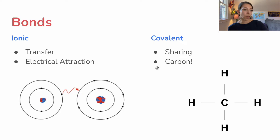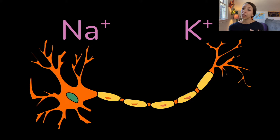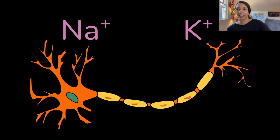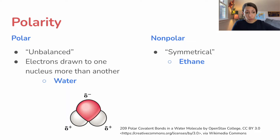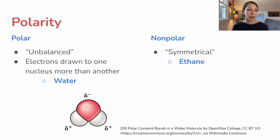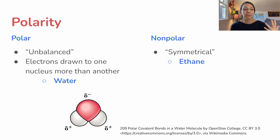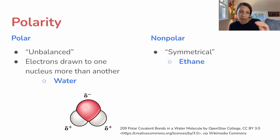Ions, like sodium and potassium, are atoms that have gained or lost electrons — resulting in a positive charge for cations, or a negative charge for anions. Certain molecules or groups of bonded atoms can also have different properties, like polarity. Some can be polar, which means they have an unbalanced charge, and then nonpolar, which have a more symmetrical charge. This means the electrons in those atoms are drawn to one nucleus more than another.